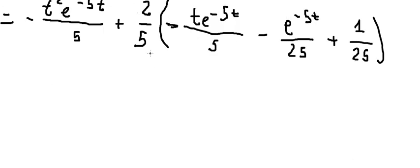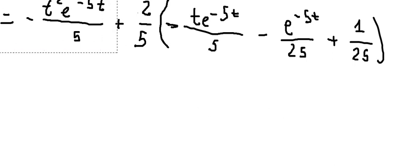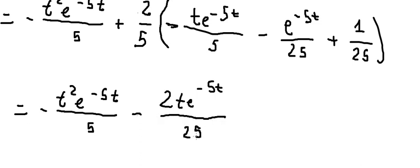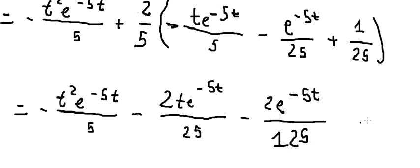So we have 2 over 5, and we multiply this all together to get the final answer: negative 2t times e to the power of negative 5t over 25, minus 2 times e to the power of negative 5t over 125, plus 2 over 125. And that is the final answer. Thank you for watching.